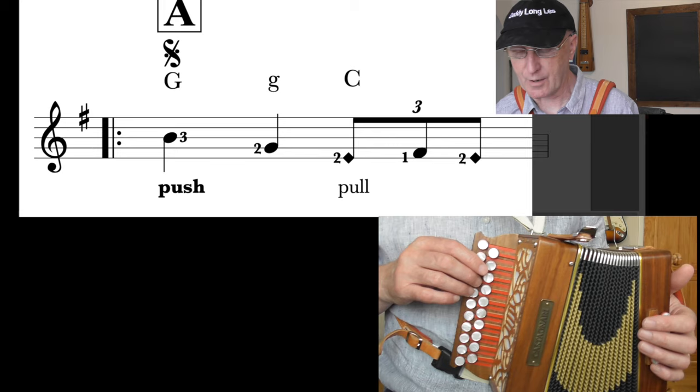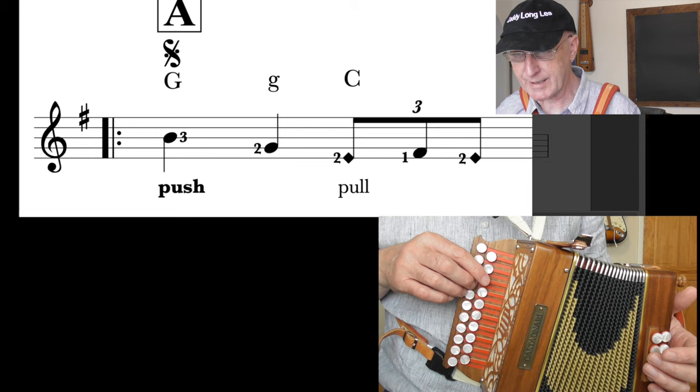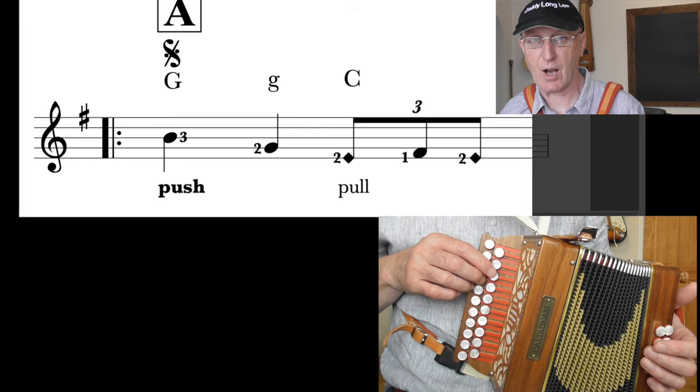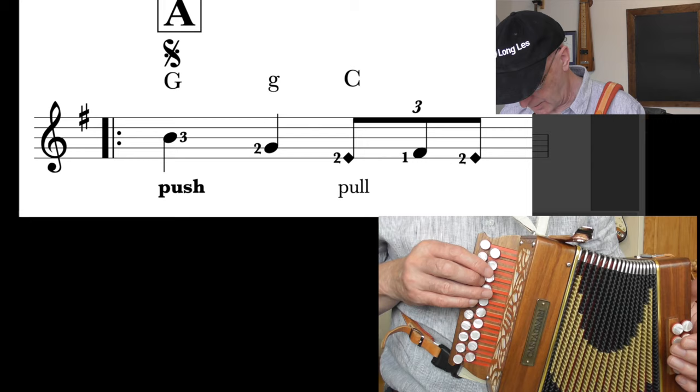So E, finger two. Now the first finger goes over onto the G row, still pulling to get the F sharp, and back to the E again on the D row. So the two E notes there have diamond heads because they're both on the D row.